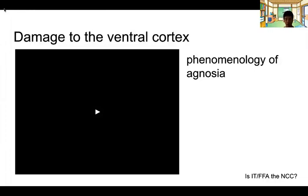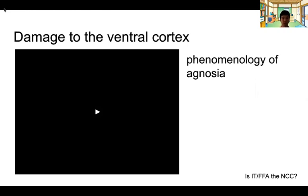That was the case report from patient Kevin, who has object agnosia — agnosia meaning lack of recognition despite intact perception of the object's parts. He demonstrated quite a good understanding of the neuroscience, talking about how he can recognize faces but not objects because there are different brain areas specialized for face processing and object processing. His lesion is specifically in the object areas, but not the face areas.